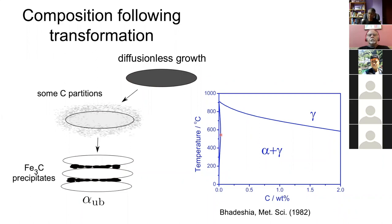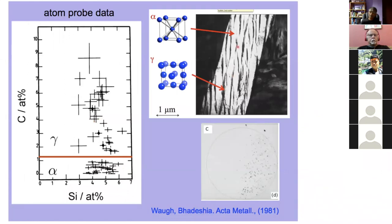Looking at the iron-carbon equilibrium phase diagram with only two phases — no cementite — I can extrapolate the phase boundaries to whatever temperature using the thermodynamic method. We can measure the carbon concentration inside the bainitic plate using the atom probe, a technique for identifying atoms using a time-of-flight mass spectrometer. The structure has plates of ferrite with carbon-enriched austenite between them.